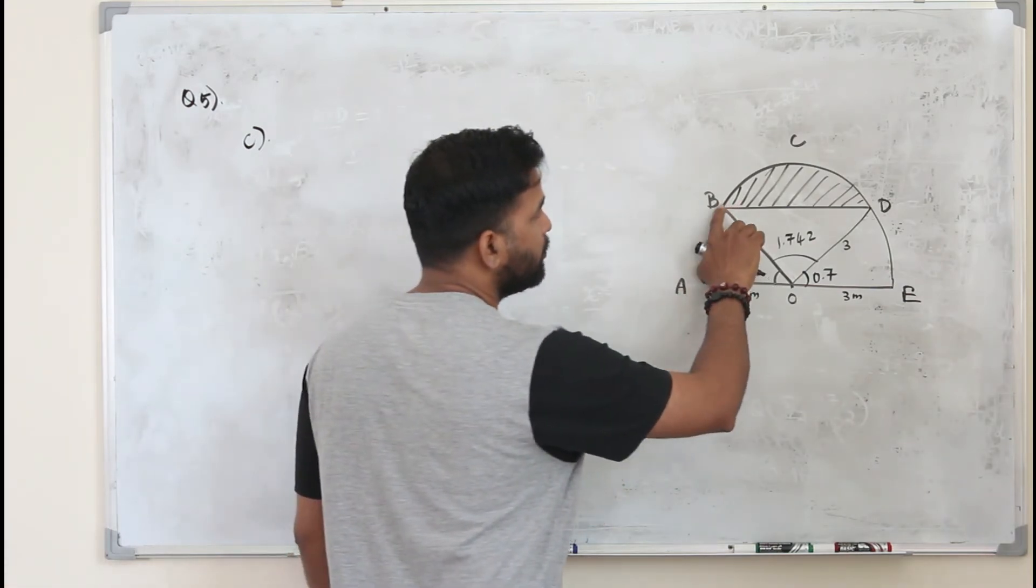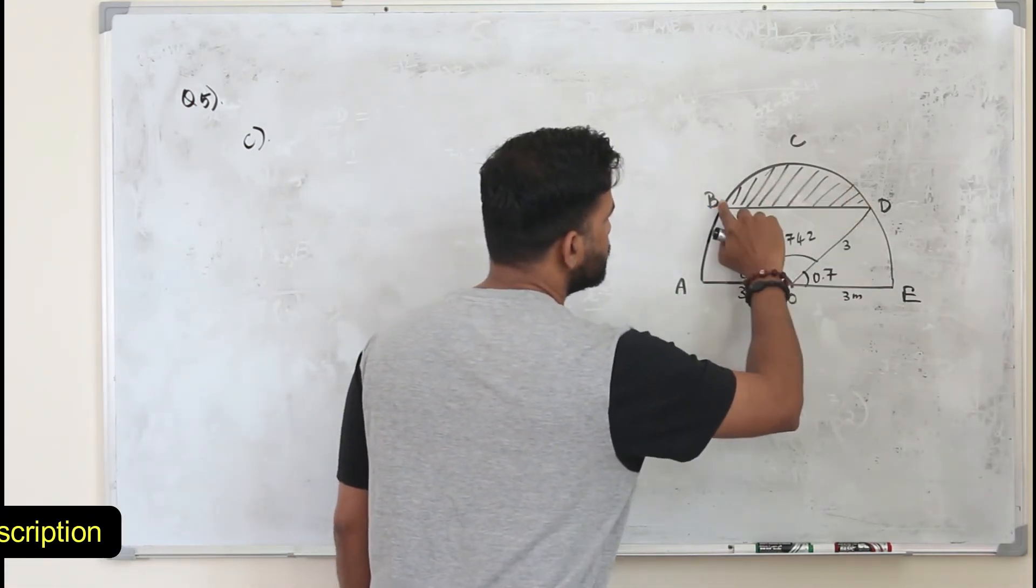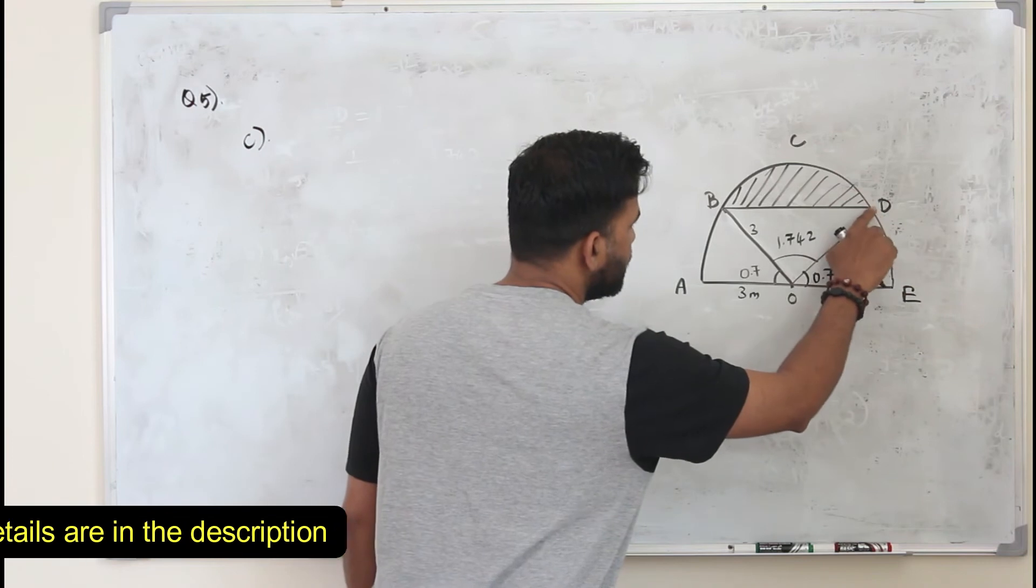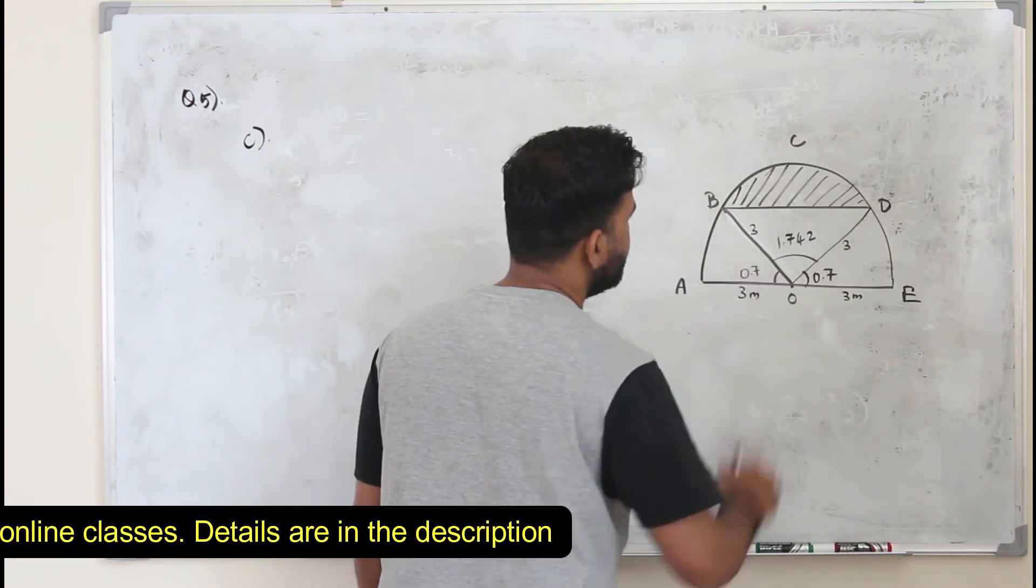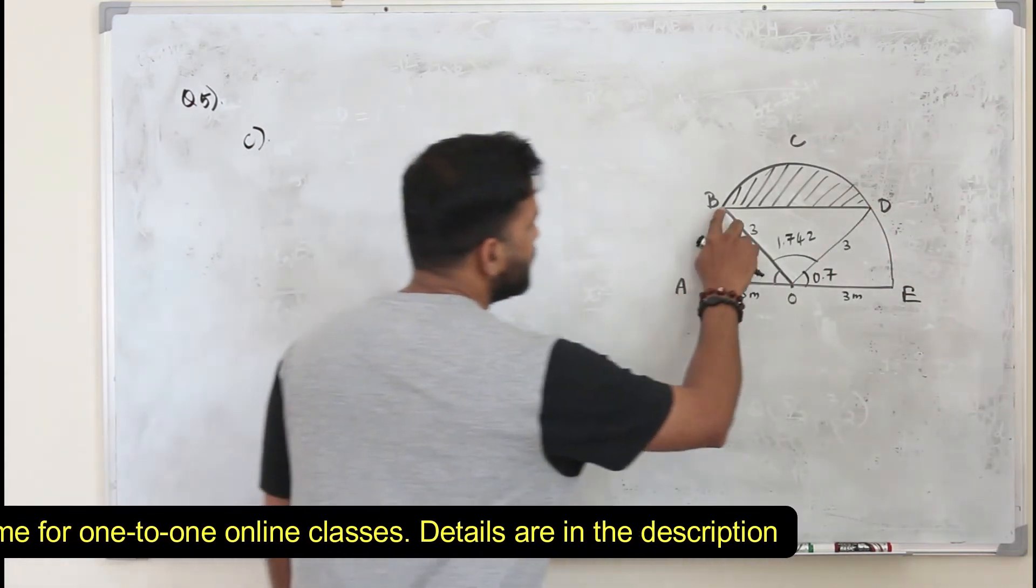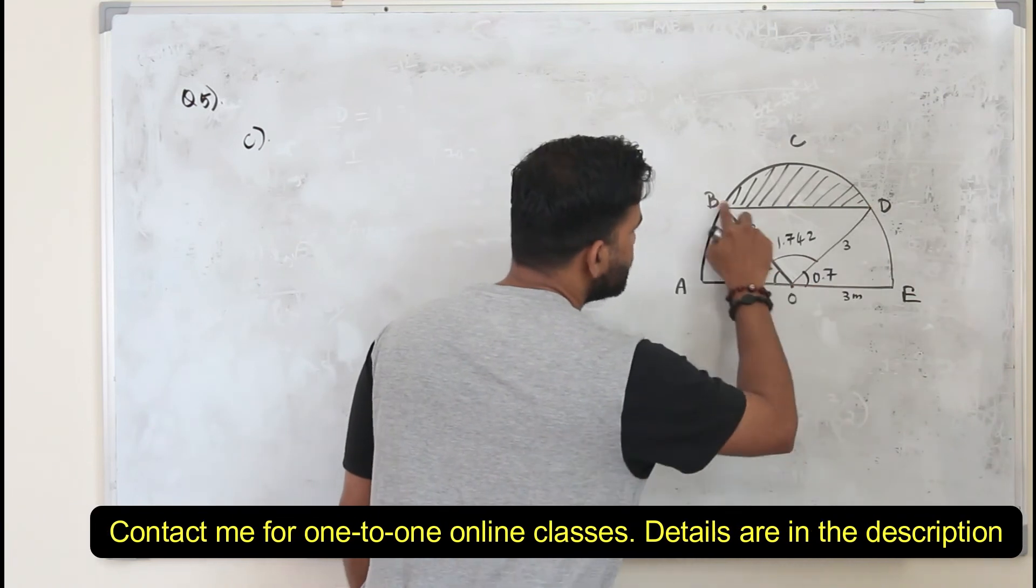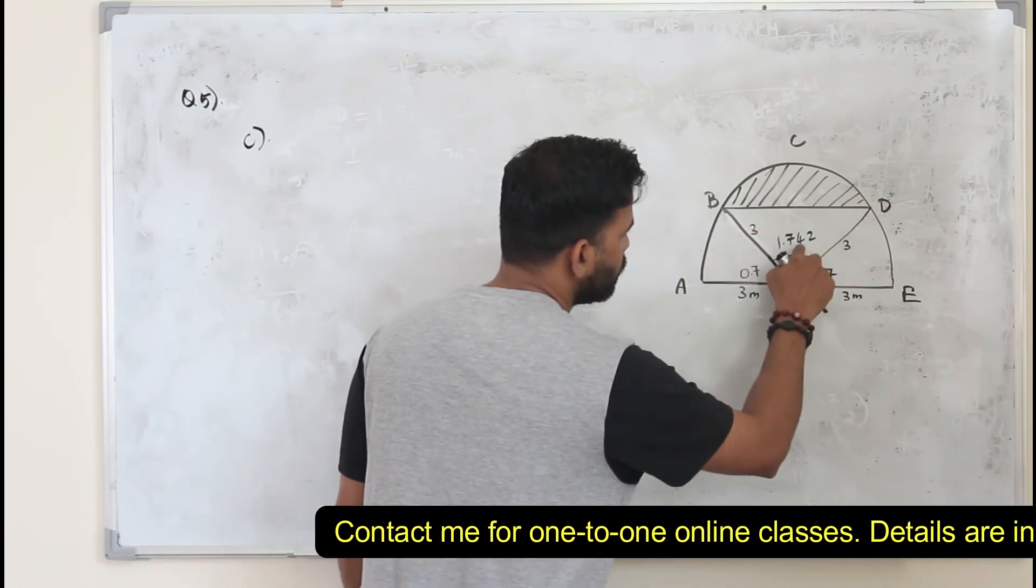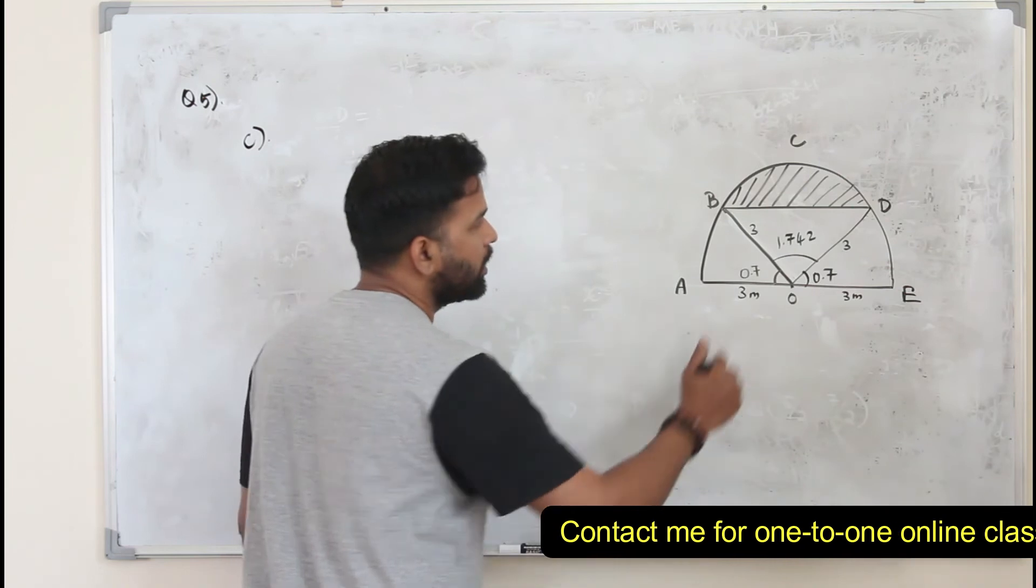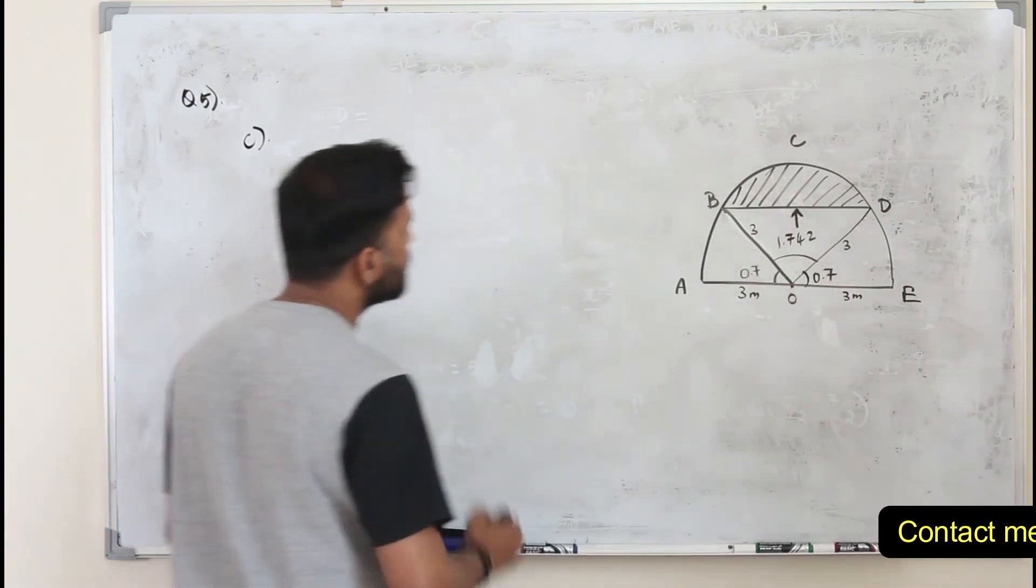Here we are going to find the perimeter of this shape. So you have to find this arc length plus the length of BD. How do we find the length of BD? You look at this triangle. You have two sides and one included angle.